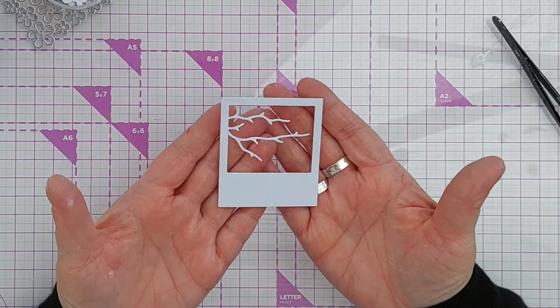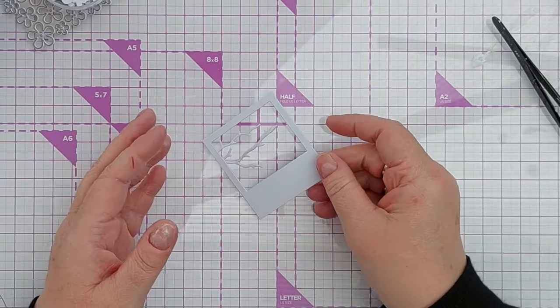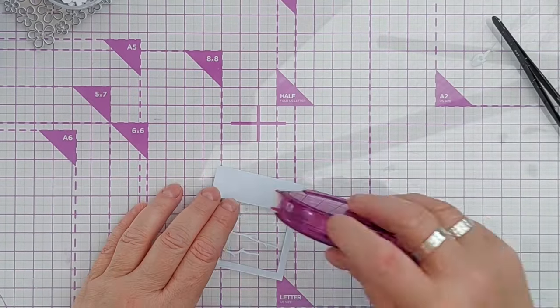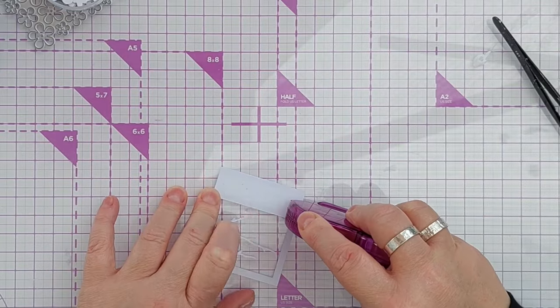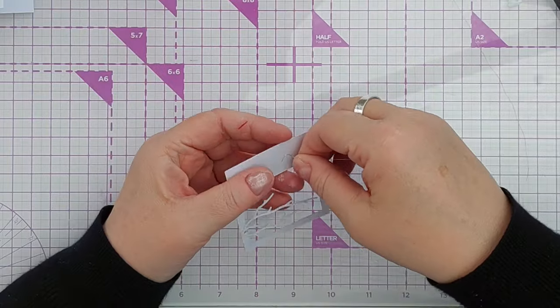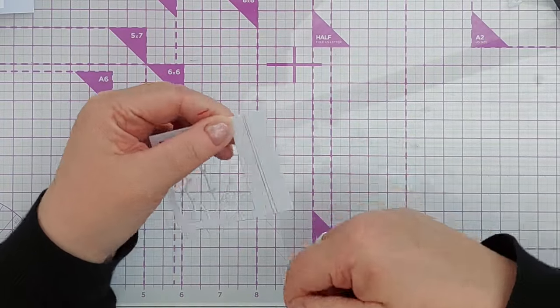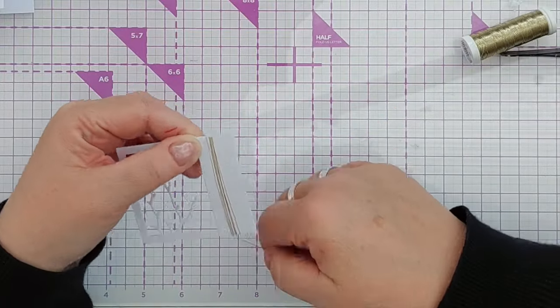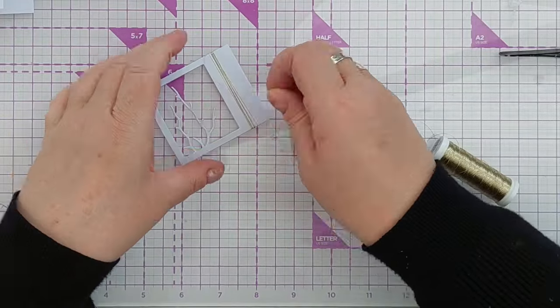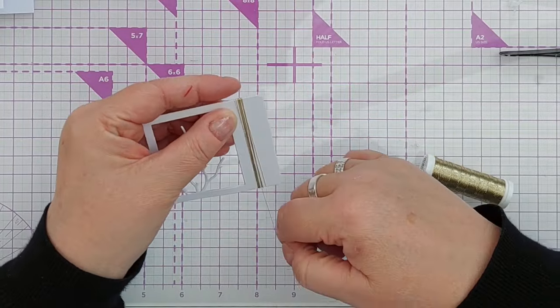But before I stick that on the front of my card, I want to wind some gold thread around it to give it a bit of bling and a bit of texture. So on the back I'm going to just stick a couple of rows of tape runner, and then take my gold thread, stick it here, and then wind it round quite a few times just to get a nice delicate band of gold. Having the tape on the back just stops it unwinding itself.